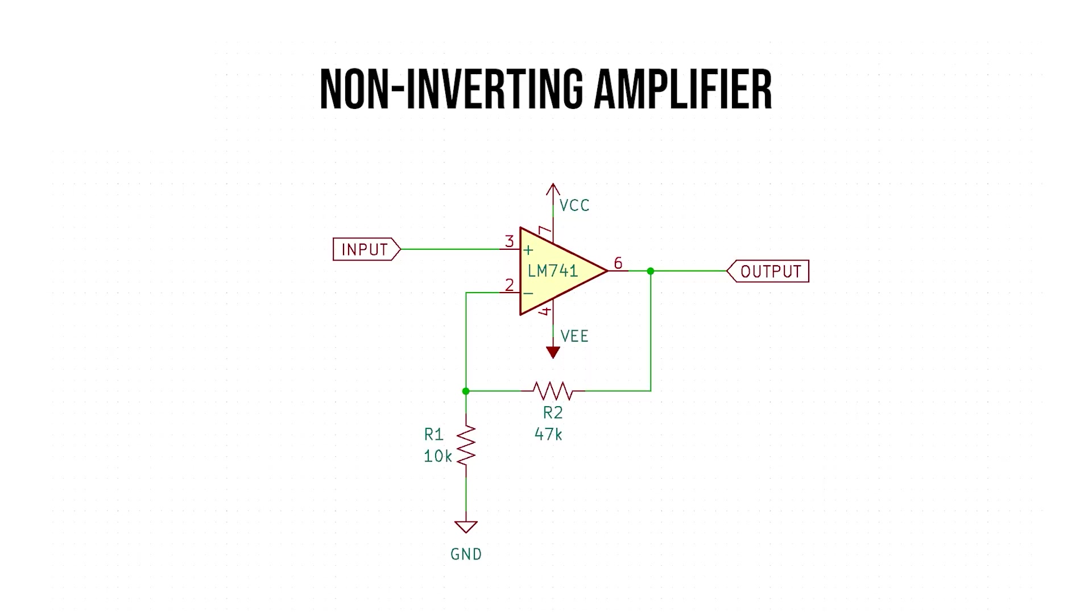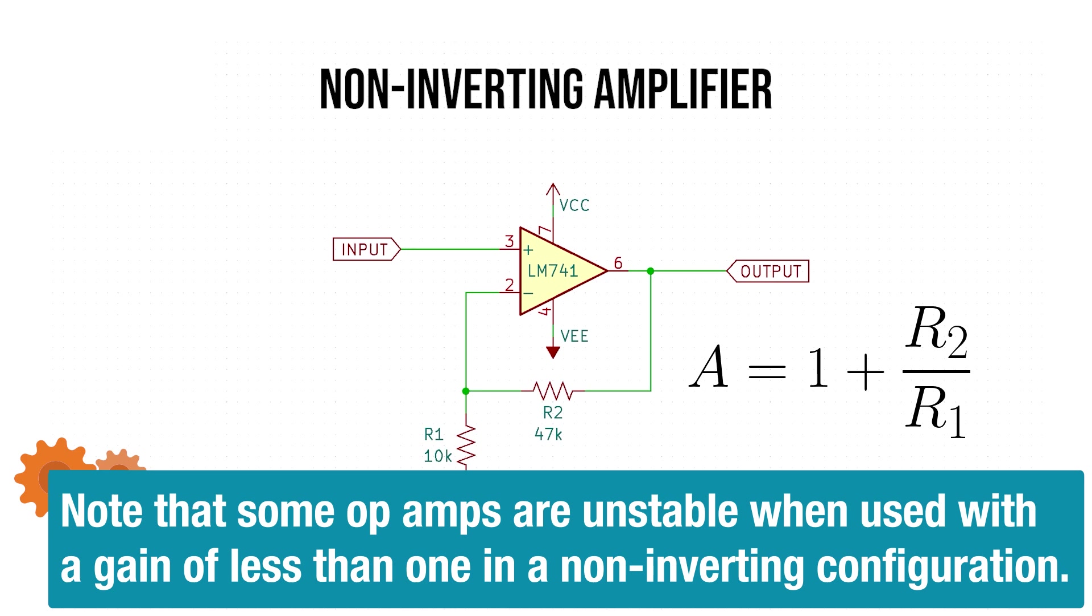The second circuit is the non-inverting amplifier. As the name implies, the phase of the output is in phase with the input signal. We drive the non-inverting pin directly with our signal, and at the output we have a voltage divider. The gain is 1 plus R2 over R1, meaning the gain can never be less than 1, whereas the inverting amplifier could be used as an attenuator.